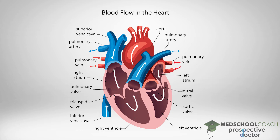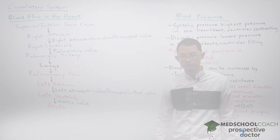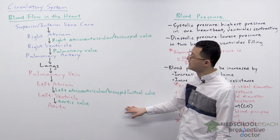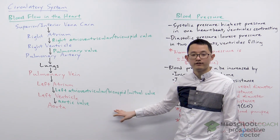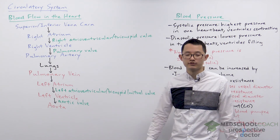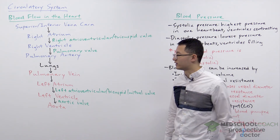Again, this prevents backflow of blood from the left ventricle into the left atrium. This oxygenated blood then travels from the left ventricle into the aorta, where it goes to the rest of the body. There is also the aortic valve that prevents backflow of blood from the aorta into the left ventricle. This is the path of blood flow through the heart — make sure you're able to walk through this for the exam.